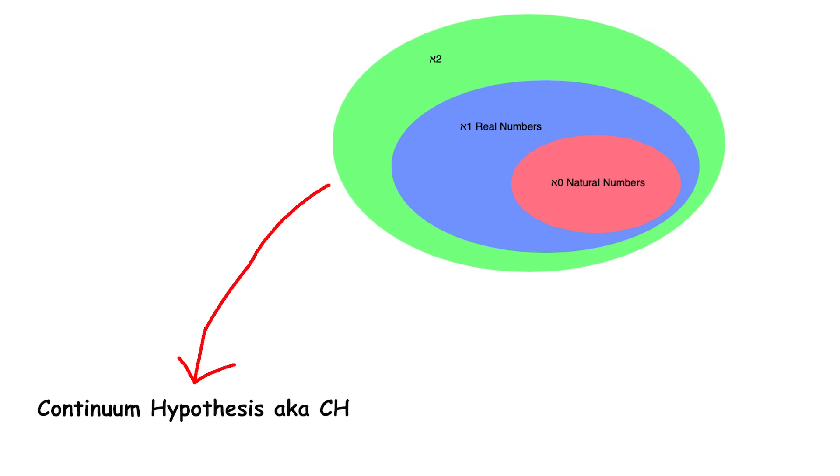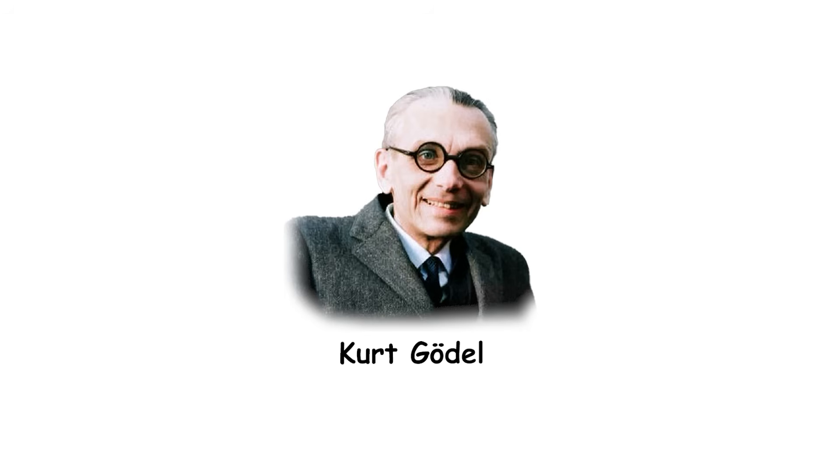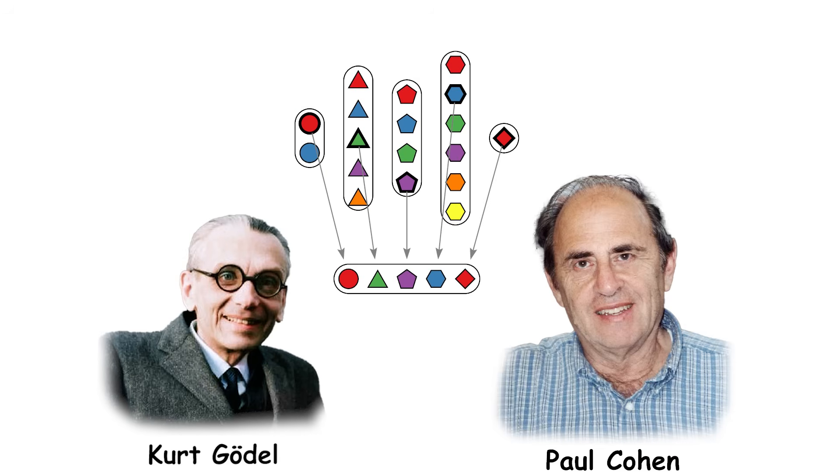So what's the answer? It turns out that CH is neither true nor false. Mathematicians proved that CH is independent. It can be both true and false without causing any logical contradictions. This was shown in two parts. Kurt Gödel proved in 1938 that CH is consistent with the basic rules of math. Decades later, Paul Cohen proved that the opposite of CH is also consistent. This means CH is like the axiom of choice, it's a statement that could be either true or false, and math works either way. It is a weird situation, but it is an important discovery in the world of infinity and set theory.